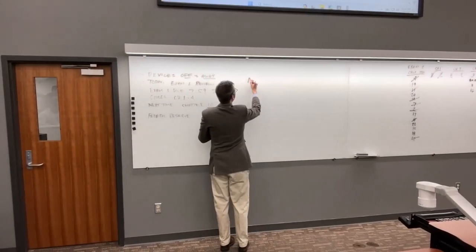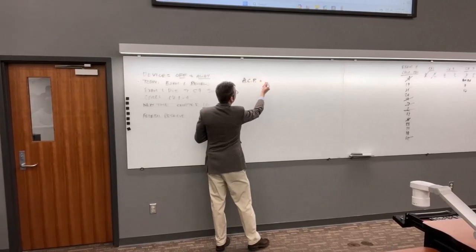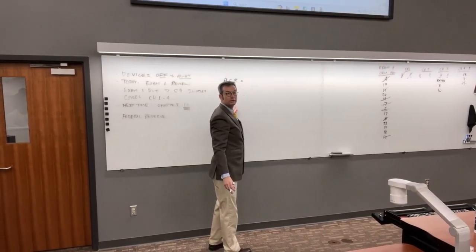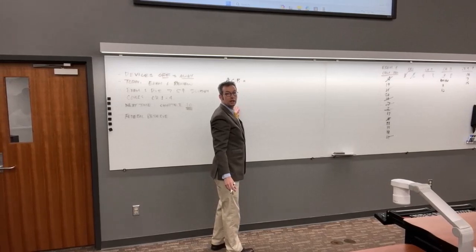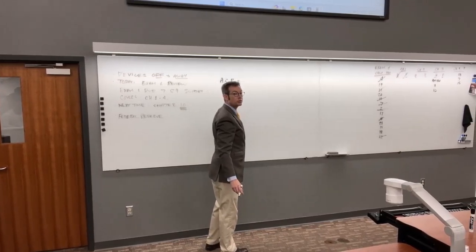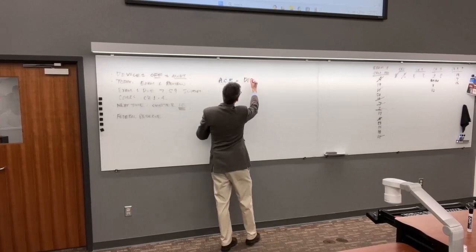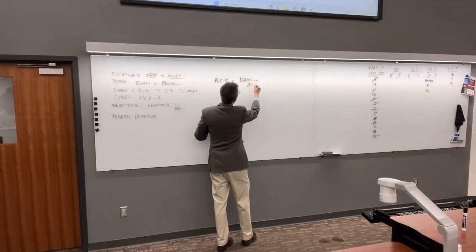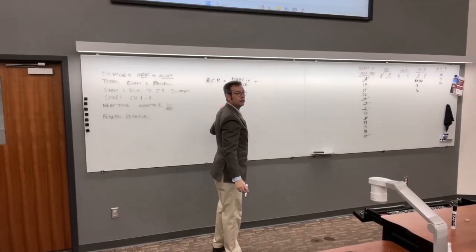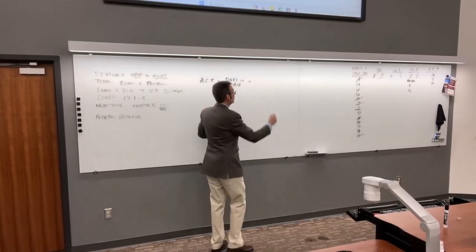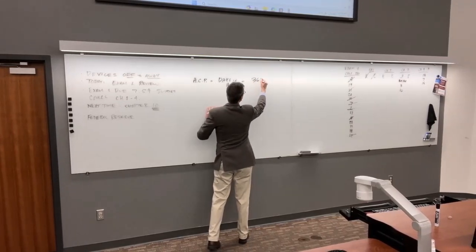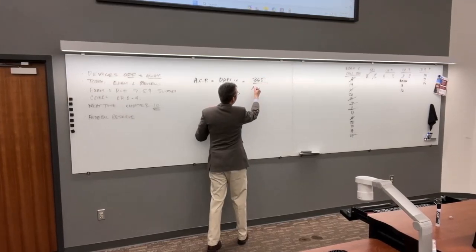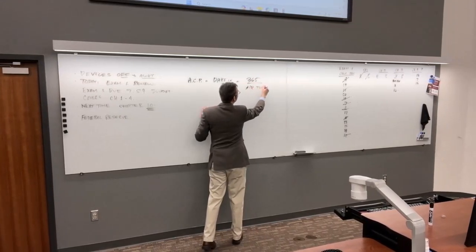The average collection period is also known as days sales in receivables. The formula is 365 divided by accounts receivable turnover, and AR turnover equals sales divided by accounts receivable.